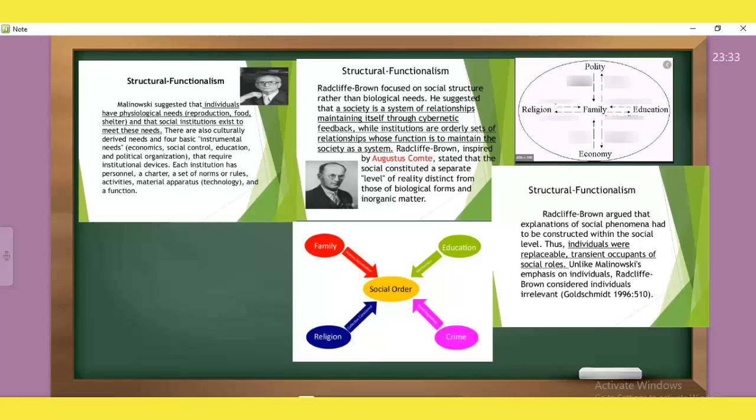Malinowski: individuals, physiological needs. Reproduction, food, shelter, social institutions, any needs. Individuals, psychological approach. Maslow, individual needs. So instrumental needs: economic, social control, education, political organization. Each institution has a personnel, a charter, a set of norms and functions.